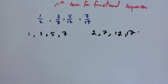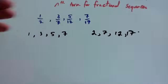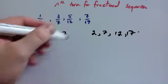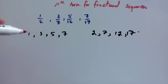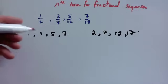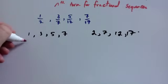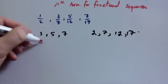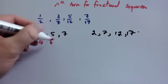So let's look at the numerators to begin with. The numerators are one, three, five, seven. We're going to work the nth term out for this. The sequence is getting bigger by two each time, so you write down the two times tables — the multiples of two — beneath the sequence: two, four, six, eight.